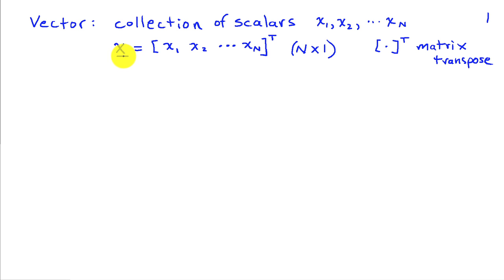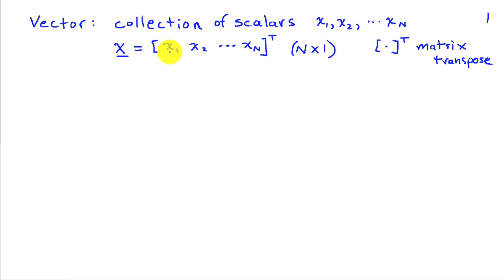The symbol for a vector, when I write it out, will be a lowercase symbol with an underscore or a line under it, and I'm generally going to assume that vectors are column vectors. I've written this as a row to save space, and then taken the transpose so that vector x is an n-by-1 vector. These entries could be samples of a time signal taken at different instances in time, samples from different sensors such as different microphones recording in a room, or different antennas recording electromagnetic signals.